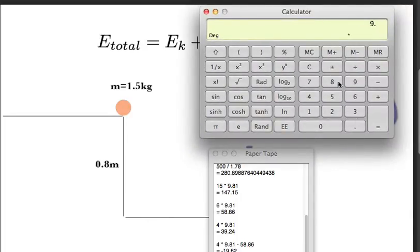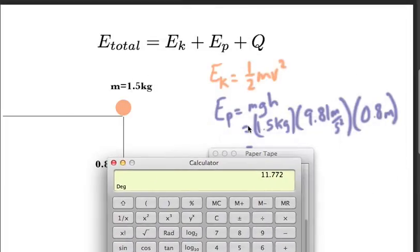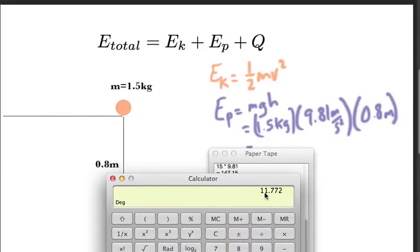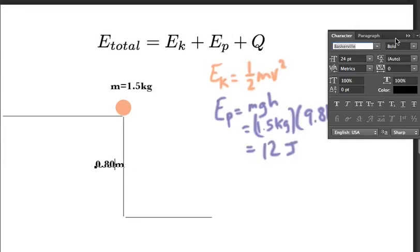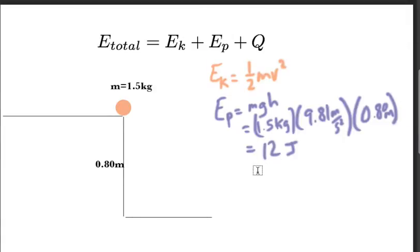And so that equals 1.5 times 9.81 times 0.8, which is 11.772. With significant digits, when we round that, because we're only limited to two digits, actually only one digit, we'll just say it's two digits, so we can round that to 12 joules.